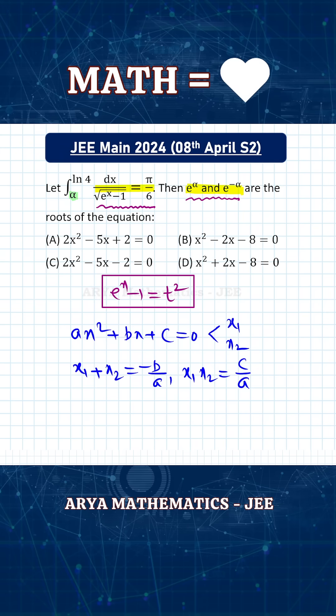Now here if you notice these two numbers, e^α and e^(-α), these two are reciprocal of each other, which will imply that if we need a quadratic equation with these two roots, then product of roots x₁ × x₂, this will be e^α × e^(-α) and this has to be c/a.